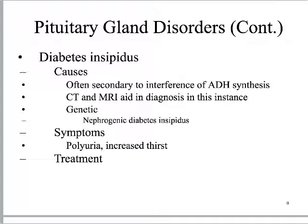I've known someone who has hypopituitarism. It caused them to not grow very rapidly as a child — they were born at healthy weight but weren't growing at the same rate as others in their class. Eventually they had to go on a growth hormone and receive shots every week, then eventually every day. Now at puberty that individual is doing just fine — they figured out exactly what hormones were being impacted and were able to receive hormone therapy.